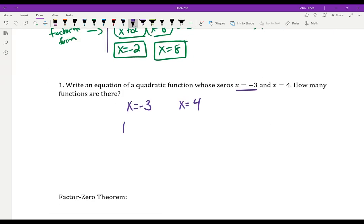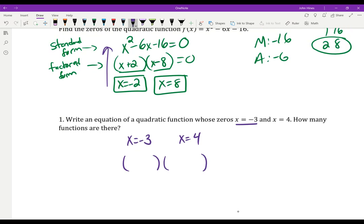Well, what factor, work backwards here, would give me x equals negative 3? So x plus 3 is my factor. If x equals 4, what's my factor that that came from? x minus 4 equals 0. So notice we can work backwards. If negative 3 is a 0, we can go get our factor of x plus 3.